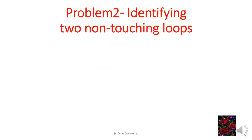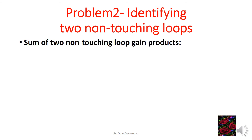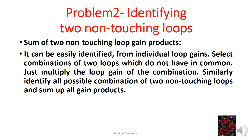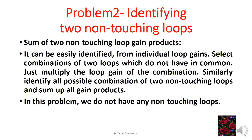Identifying two non-touching loops: sum of two non-touching loop gain products. Select combinations of two loops that do not share nodes in common and multiply their gains. In this problem we do not have any non-touching loops, so the sum of P_m2 equals 0. Similarly, we do not have three non-touching loops, so the value of sum of P_m3 is also 0.